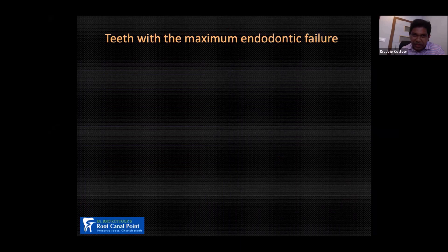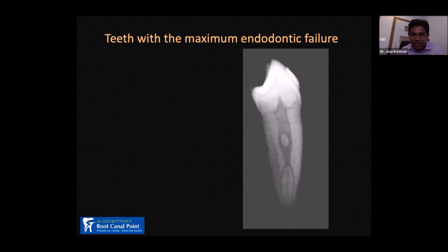Which tooth has the maximum endodontic failure? Many people think it is the maxillary molar, mandibular molar, or third molar. What you should understand is that the most common endodontic failure happens with the mandibular premolars — preferably the first premolars. The root canal anatomy of this tooth is very tricky, and that is why it is called the enigmatic tooth.